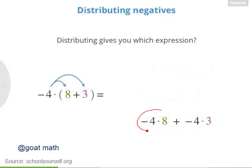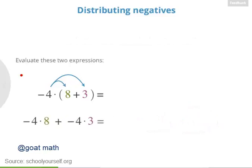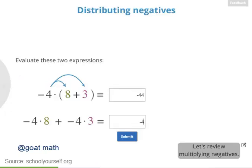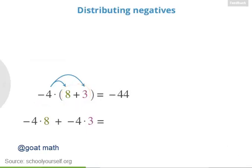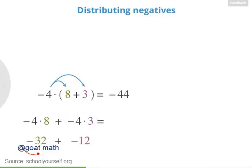Distributing the negative 4 gives you negative 4 times 8 plus negative 4 times 3. Evaluate these two expressions to make sure that they really are equivalent. In the top expression, you should first evaluate what's inside the parentheses, which is 8 plus 3, or 11. Negative 4 times 11 equals negative 44. In the bottom expression, negative 4 times 8 is negative 32, and negative 4 times 3 is negative 12. Adding negative 32 and negative 12 again gives you negative 44.